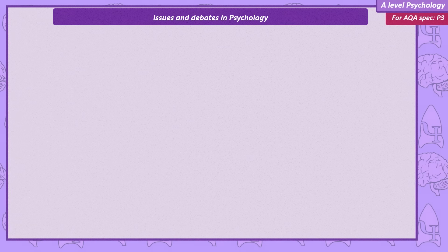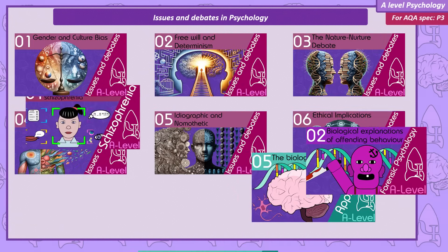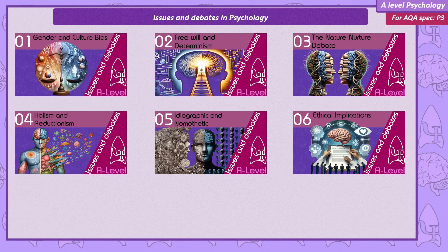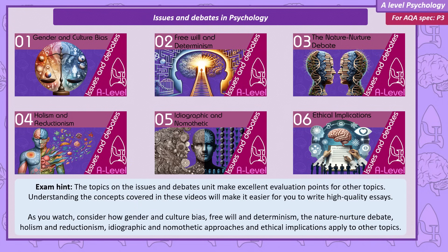You'll notice that I use lots of examples from other parts of psychology in this issues and debates unit. In part, I'm doing this to help put these complex ideas into context, but also because the issues and debates make excellent evaluations for other parts of your course. And another reason is that often in the issues and debates section of your exam, you're asked to talk about these ideas in the context of other topics. I can't include every possible link, so perhaps as you watch these videos, consider what other parts of the specification I could have mentioned.